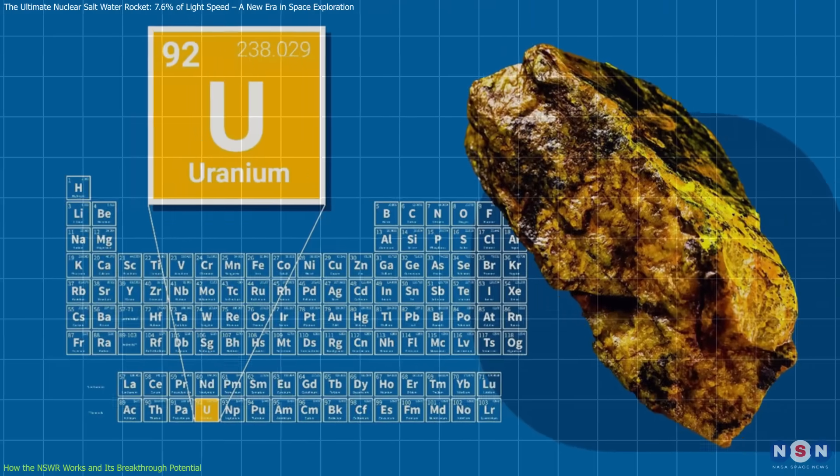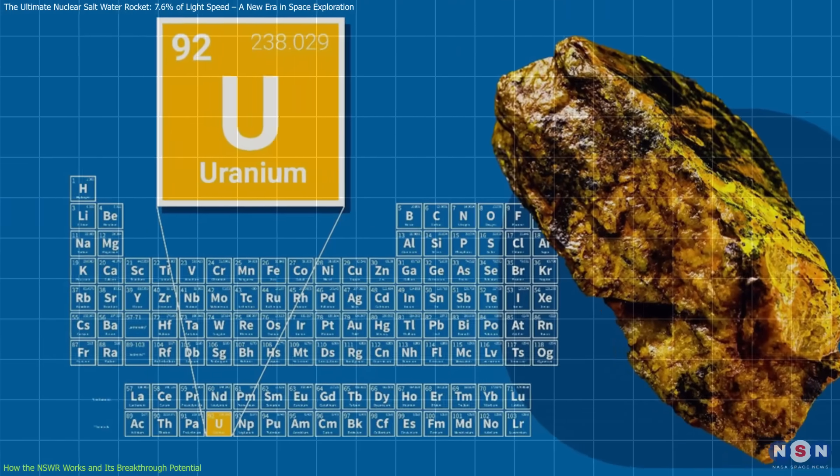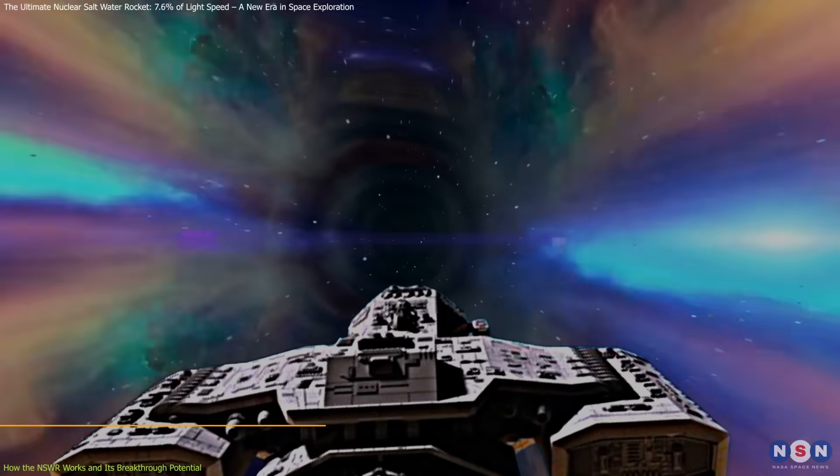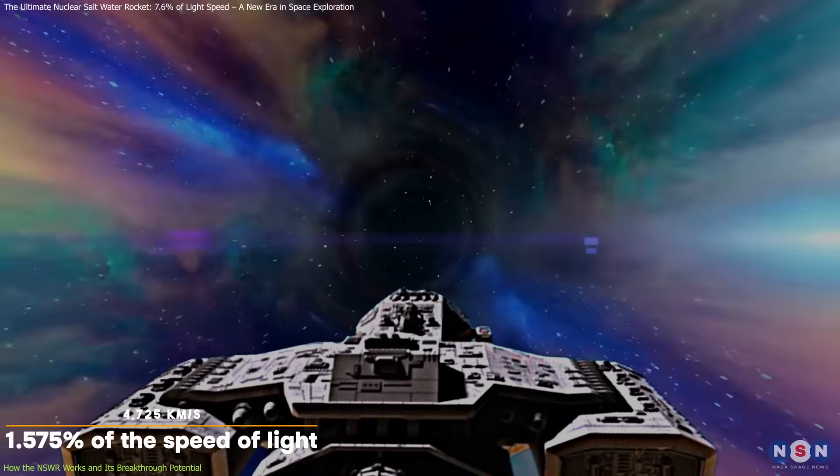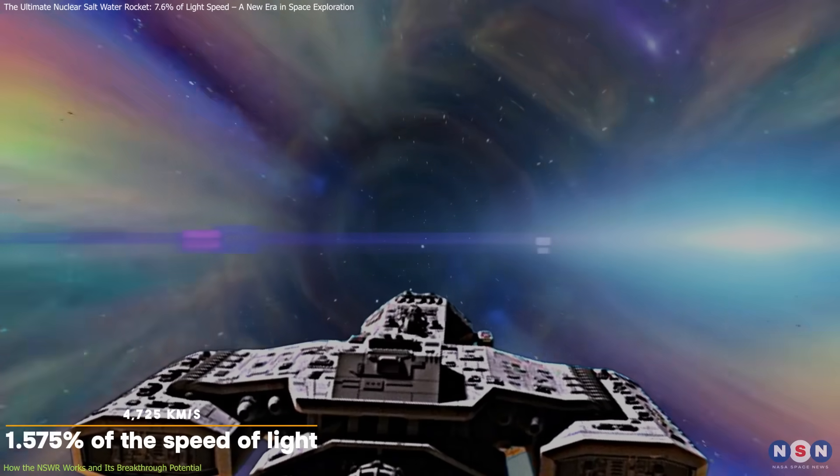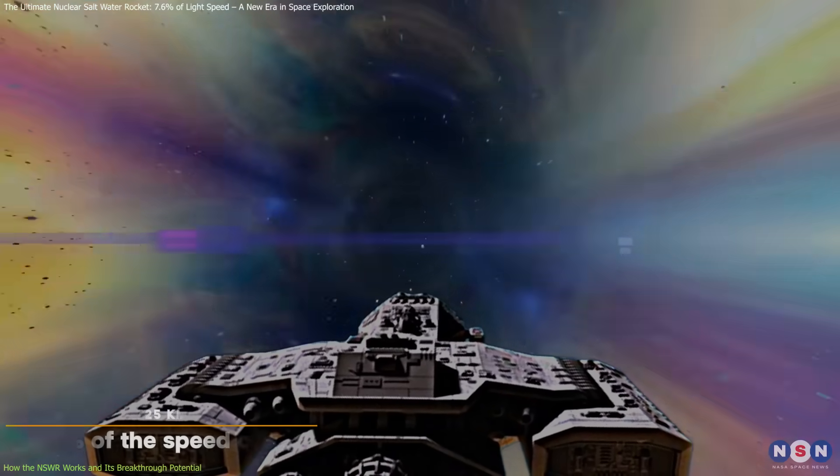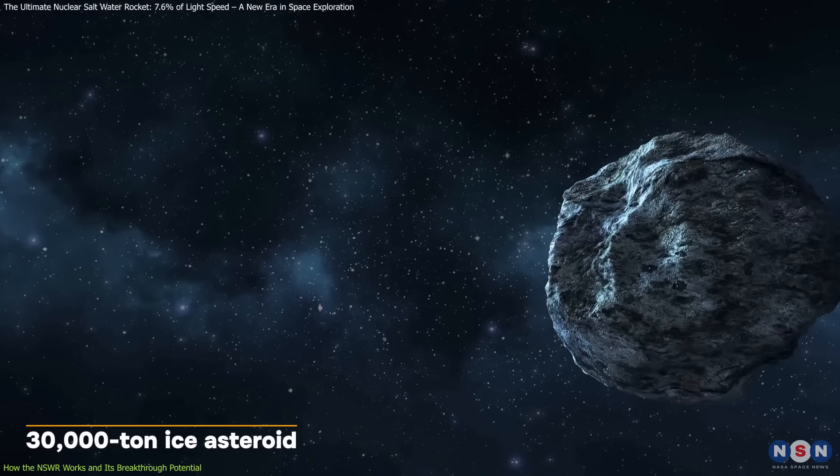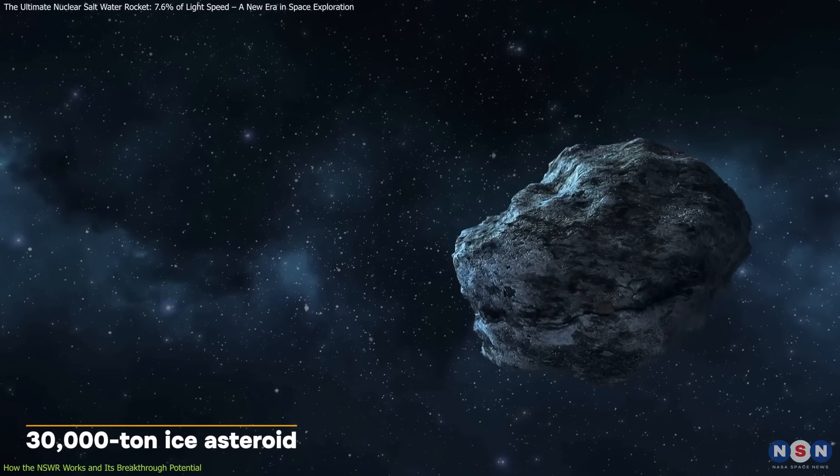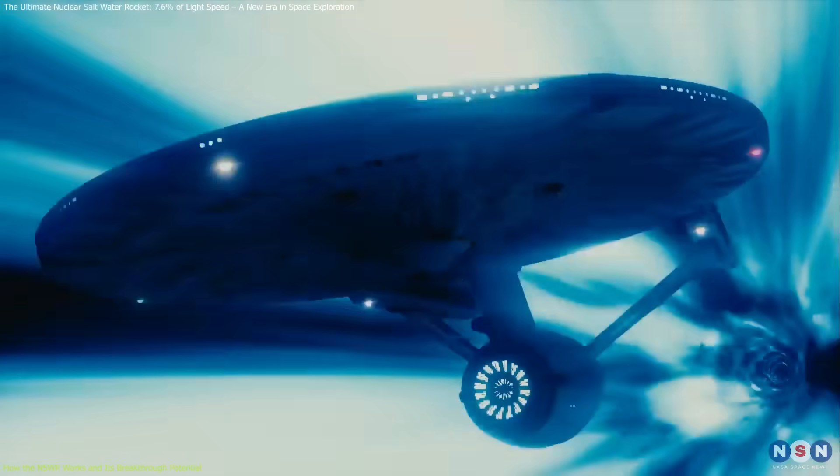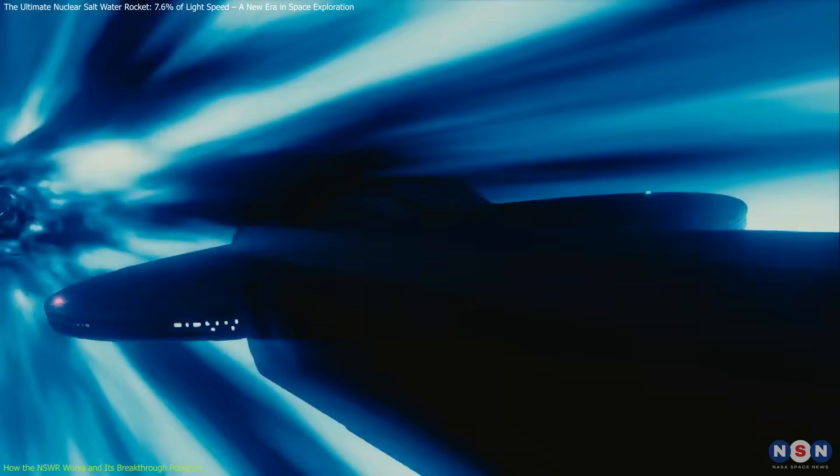If weapons-grade uranium, 90 percent enriched U-233, is used, the exhaust velocity can reach 4,725 kilometers per second, or 1.575 percent of the speed of light. By using a 30,000 ton ice asteroid as additional propellant, along with 7,500 tons of uranium, the NSWR could propel a 300-ton spacecraft to an astonishing 7.6 percent of light speed.